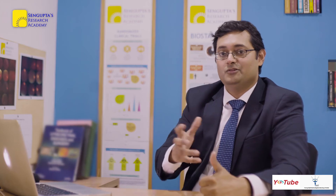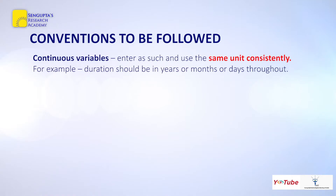For continuous variables, enter them as such and use the same unit consistently. If you say follow-up in days, keep all values in days and don't write 'days' each time. If you say follow-up in months, keep the same unit throughout. The entire column of continuous variables should have the same unit — that is the thumb rule for continuous variables.